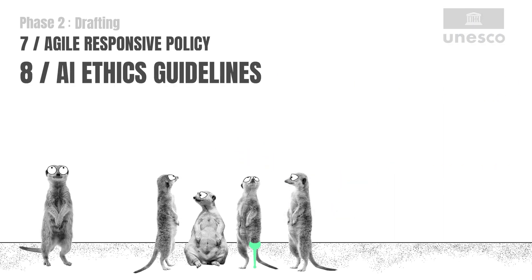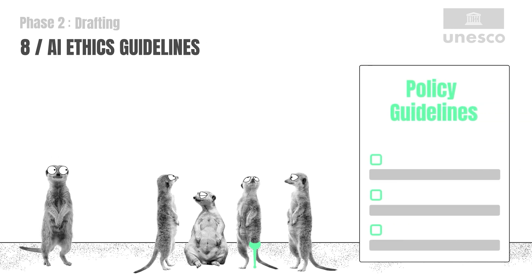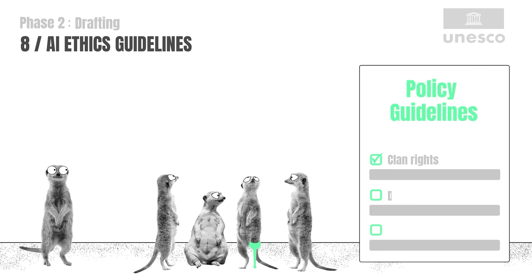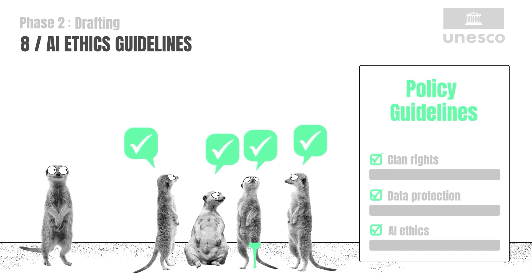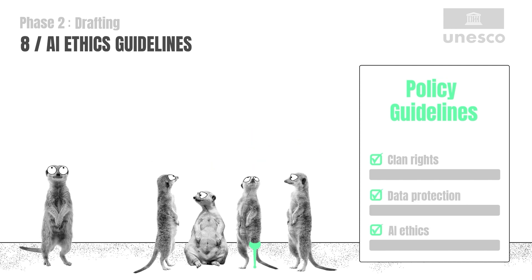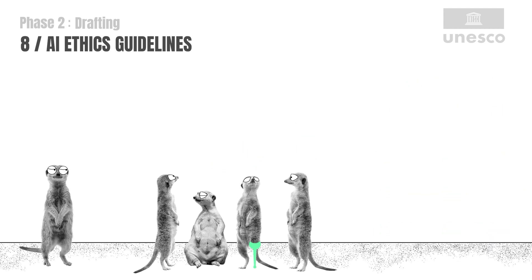Building block 8: Develop AI policies based on human rights, data protection, and ethics guidelines. This ensures the respect, protection, and promotion of human dignity, human rights, and more.